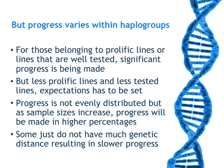For those belonging to very prolific lines that are well tested, significant progress is being made. But for the less prolific and less tested lines, you have to set expectations because there will be much less progress. Progress is not evenly distributed, but as sample size increases, progress will be made in higher percentages. Having little genetic distance in some areas also slows down progress.